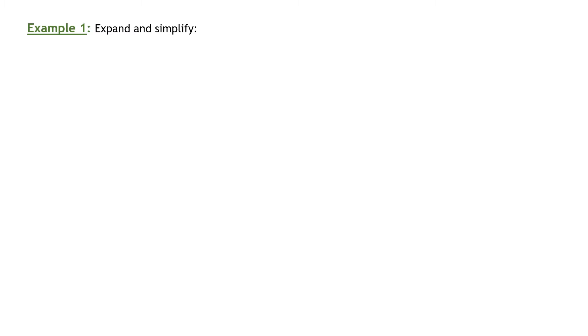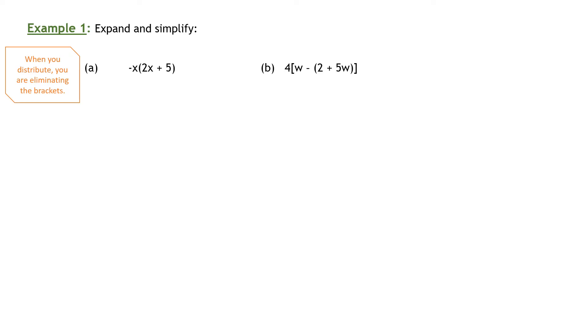Expand and simplify. You have a handout and you can fill this in as we go along. Here are our first Part A and B that we're going to do. When you distribute, what you're doing is you're eliminating the brackets. Let's draw some arrows here.